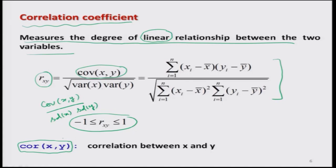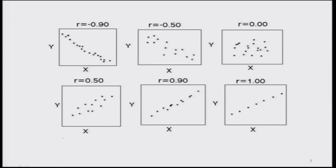The next question is the interpretation of this coefficient. Looking at figures 1 through 6: in figure 1, all points have a decreasing trend and they are very close to the line. As the values of X increase, the values of Y decrease — this decrement is indicated by the negative sign. Since points are very close to the line and R lies between minus 1 and plus 1, this value is −0.90, very close to −1.